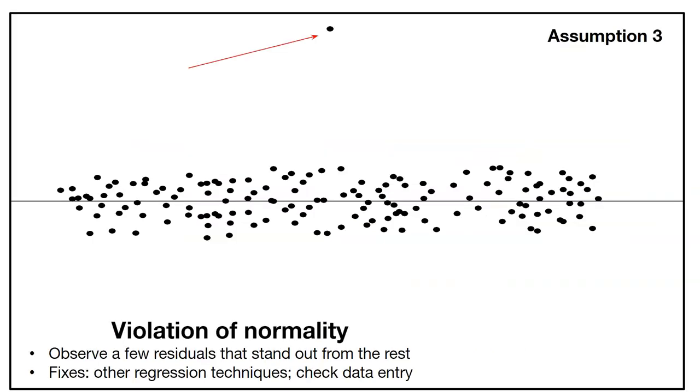We can also have a violation of normality. In this example, we observe just a few residuals that stand out from the rest—we have one data point that's clearly away from all the others. Some ways to fix this are to try other regression techniques or check your data entry. It's not uncommon to get simple data errors when they're entered or cataloged into some electronic system. It's good to check the data or look at other regression techniques.